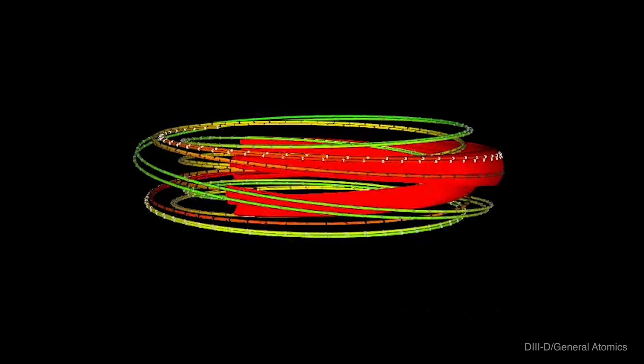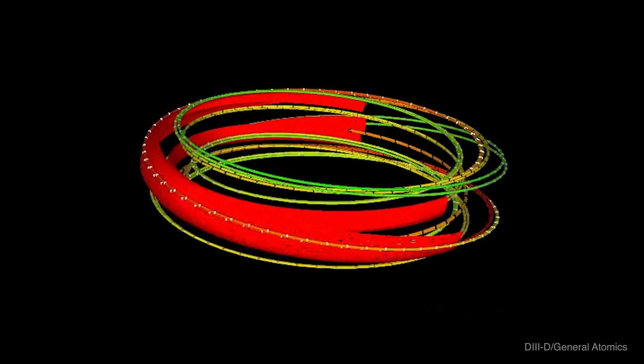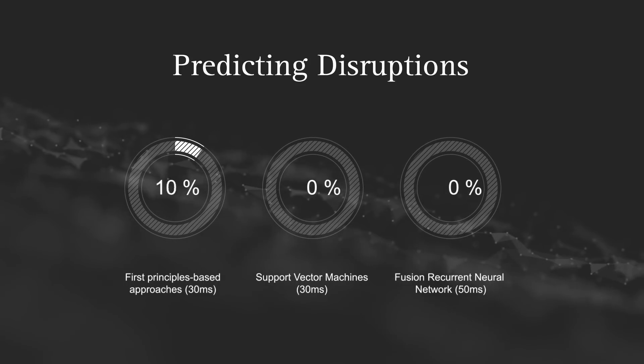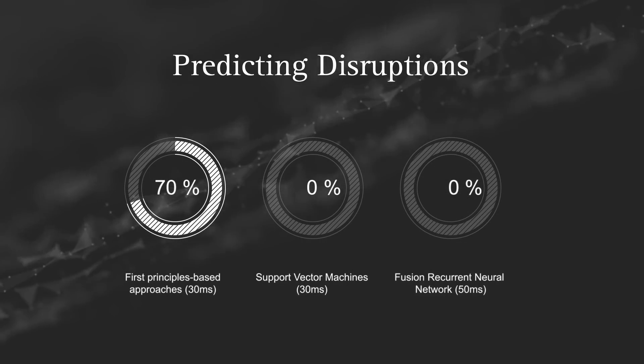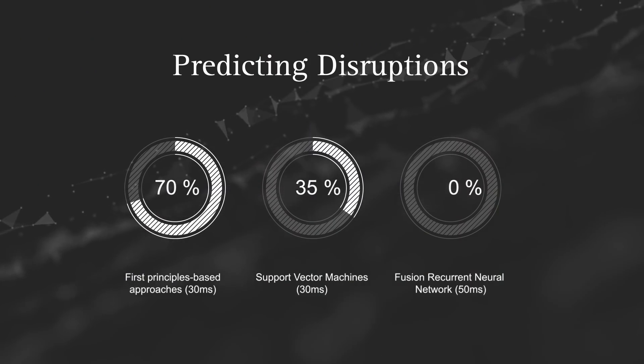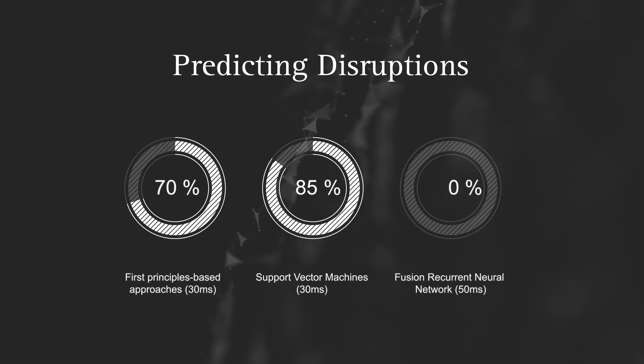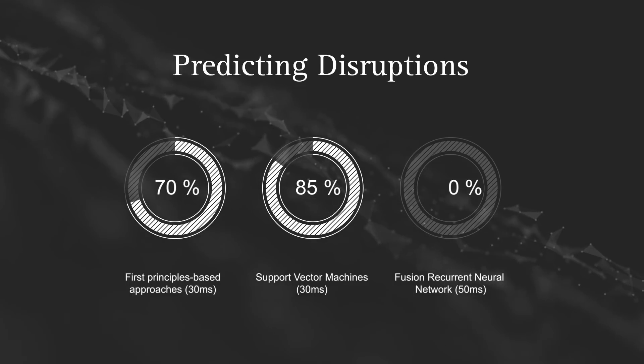Scientists needed a way to predict these disruptions before they happened. The basic workflow involves a lot of data leading to a final yes-no binary decision: will it disrupt, will it not disrupt? The first principles-based approaches couldn't even hit close to 80% predictive capability — maybe 70% or less, sometimes not better than a coin flip. So along came machine learning-based methods, statistical methods, culminating in shallow learning approaches using support vector machines, which could get up to 85% and better with less than 5% false positive.